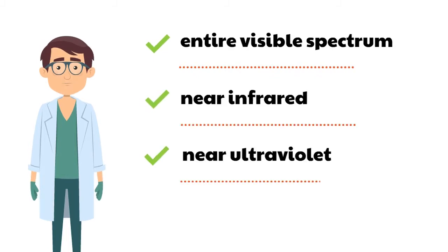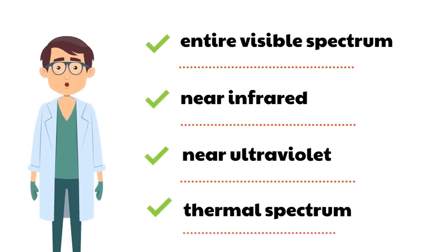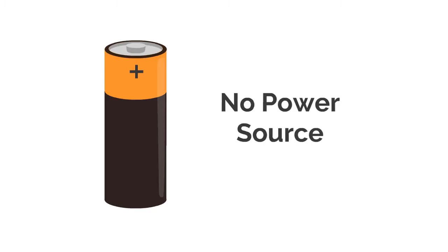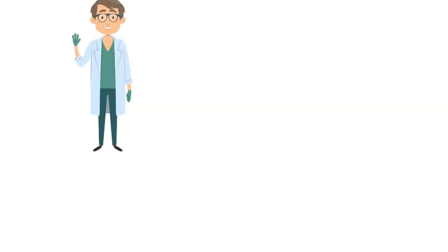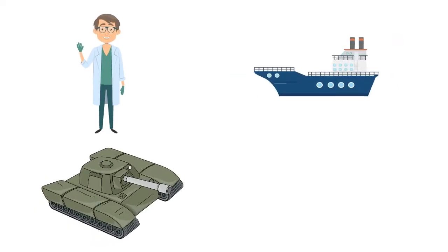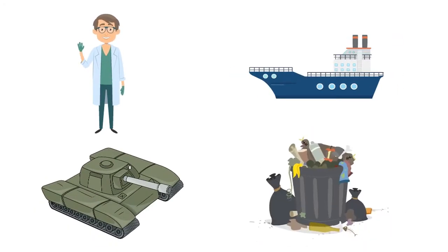It works not only in the entire visible spectrum, but also the near infrared, near ultraviolet, and the thermal spectrum without any power source. The technology is scalable, meaning it is capable of hiding a person, a tank, a ship, and anything else you need to hide.